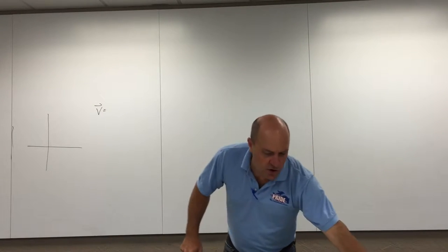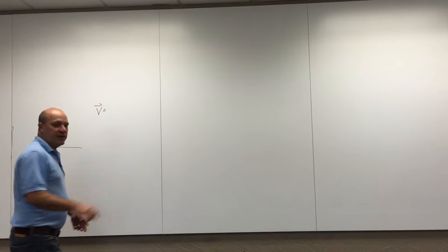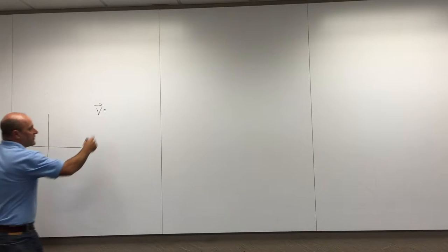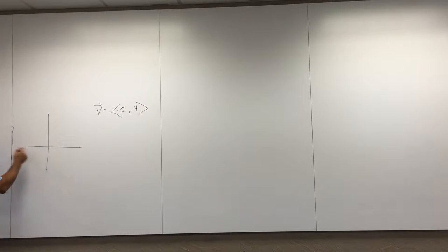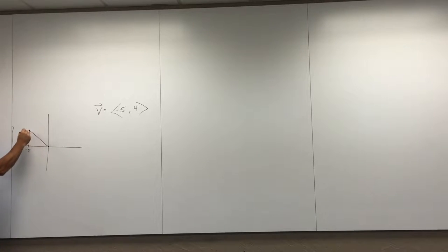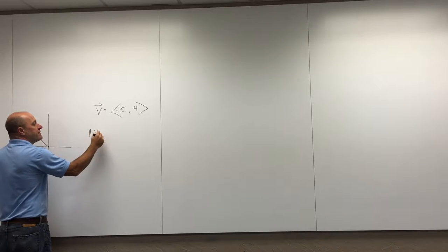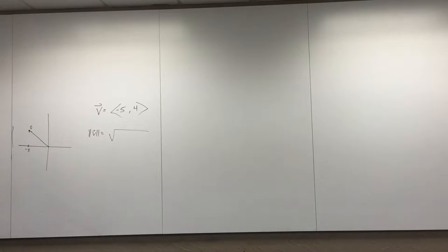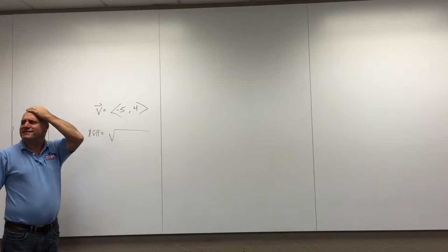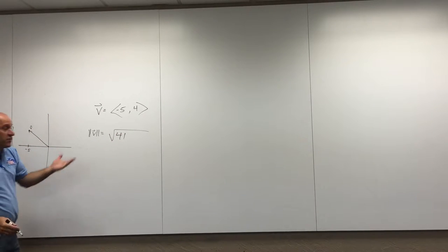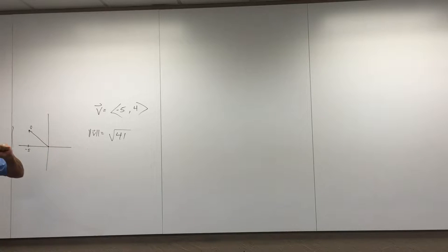I'll address this question — this is a little detail that bothers a lot of students. If I have a vector negative five, four, I can draw that vector on my x and y plane, starting at the origin, going over negative five and four. I can find the magnitude of that vector using the Pythagorean theorem: 25 plus 16 is 41, so the magnitude is the square root of 41, which is roughly 6.4.